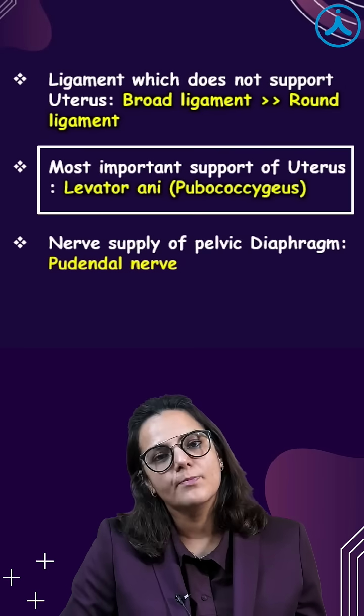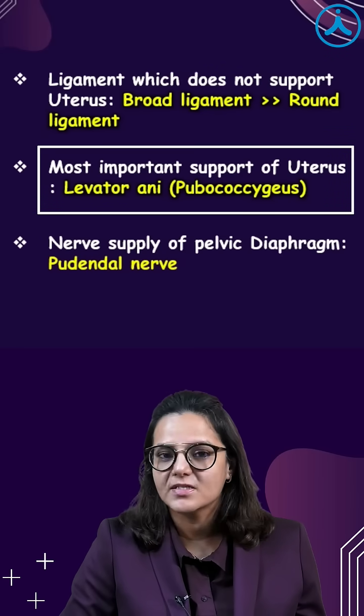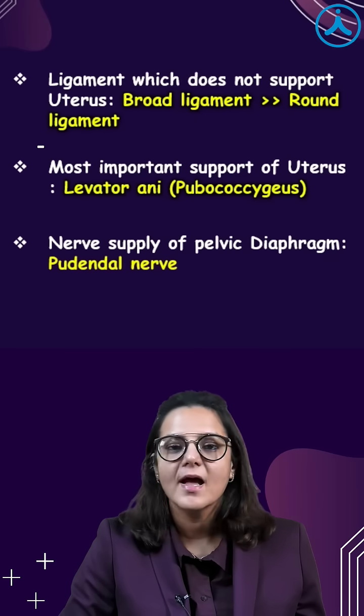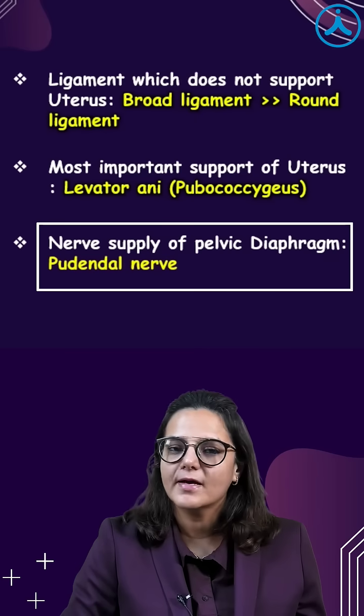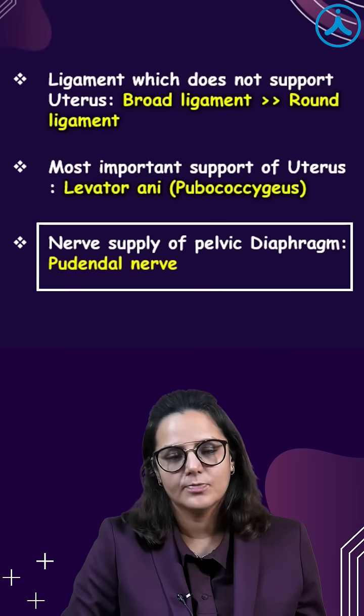The most important support of the uterus is levator anii, and specifically the pubococcygeus. The nerve supply of the pelvic diaphragm is the pudendal nerve.